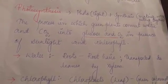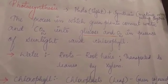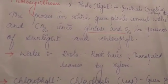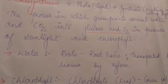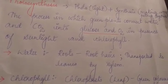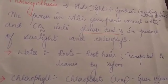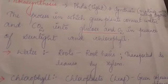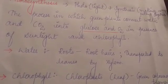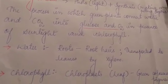The process in which green plants convert water and carbon dioxide into glucose and oxygen in the presence of sunlight and chlorophyll is photosynthesis. During photosynthesis, water and carbon dioxide are converted into glucose and oxygen.